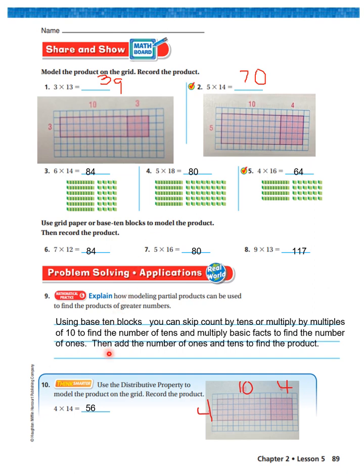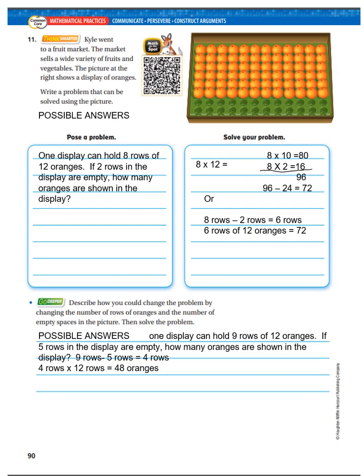It says use the distributive property to model the product on the grid and record the product. So 4 times 14, 4, 10 plus 4 is 14. Do you see how we did that? 4 times 14 is 56. If you did not get 56, don't go any further in the lesson. Go back to the first slide and review it.